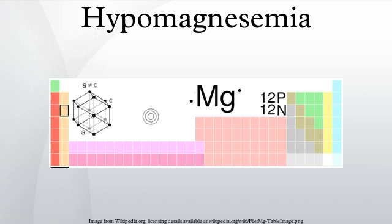Also, hypomagnesemia is related to thiamine deficiency because magnesium is needed for transforming thiamine into thiamine pyrophosphate.